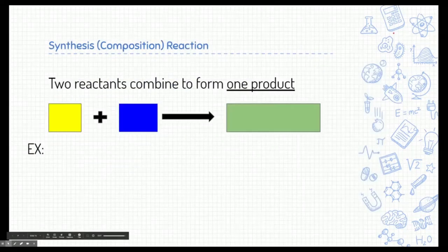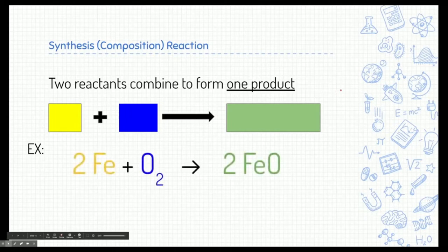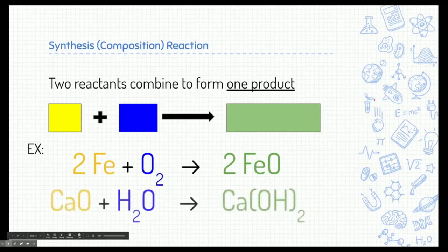Let's start with a composition, not a combustion, a composition or a synthesis reaction. This is where two reactants combine to form one product. Now, I've kind of underlined one of the key indicators of the reaction that we're looking at. So notice we have two things combining to form one. Here's an example of that. Here we have iron and oxygen and they form iron oxide. So two elements forming one compound. Now, it could be two compounds forming one compound as well. Here's calcium oxide and water forming calcium hydroxide. Again, two substances coming together to form one product.